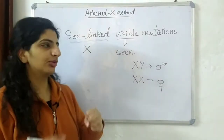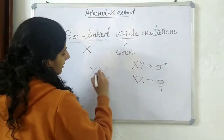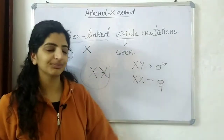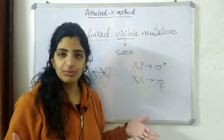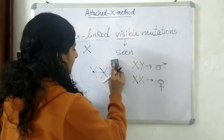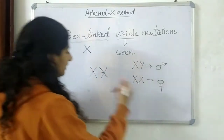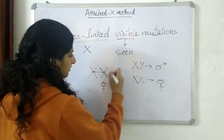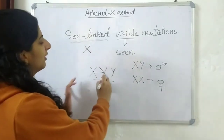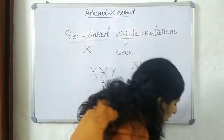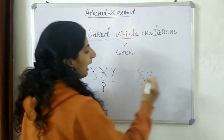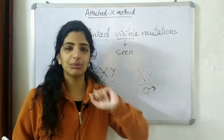The attached X method is based on attached X chromosomes, meaning we take two X chromosomes and attach them by their centromeres. These two chromosomes will be inherited together no matter what — they will not segregate independently as in Mendel's laws. Since these two X chromosomes are attached together, they form a female. The organism used has an attached XX plus a Y chromosome, making it an XXY female.